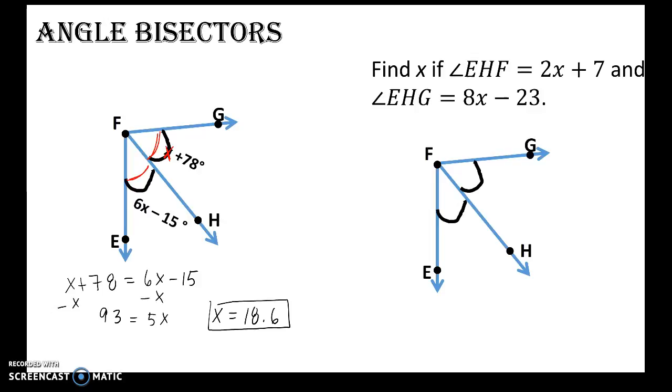All right, and last example, find x if angle EFH and angle GFH - from the markings, those two angles are congruent. So 8x minus 23 is equal to 2x plus 7. Subtracting 2x from both sides, get 6x minus 23 is equal to 7. Add 23, and then dividing by 6, I would get x is equal to 5.